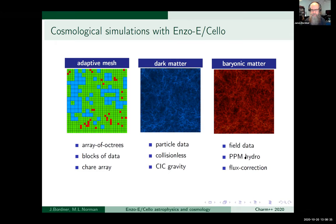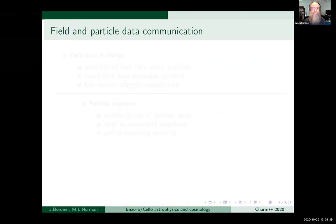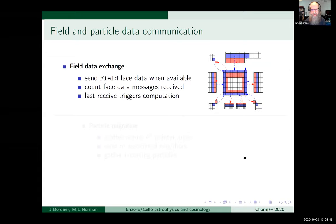We are at a flux correction step, which I'll talk about later. There is communication involved between blocks — typically nearest neighbors. For field data, each block keeps a halo of ghost cells around its assigned data that overlap the neighboring blocks. We periodically do a refresh operation where a block sends its face data to its neighbors and waits for incoming face data. It counts the number of messages received, and when it gets the last one, it triggers the next computation.